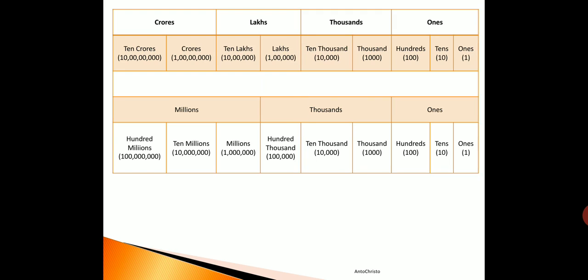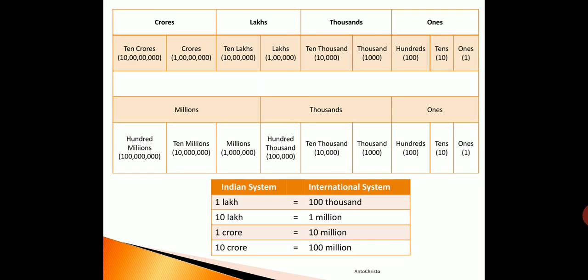In both tables, you can notice that ones, tens, hundreds, thousands, and ten thousands remain the same for both numeration systems, but after that it changes. Now we will see a few comparisons. On one side is the Indian system, the other side is the international system. The first comparison: one lakh is equal to hundred thousand. If you look straight across the place value charts, one lakh aligns with hundred thousand in the international numeration.